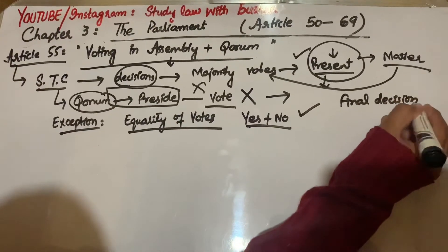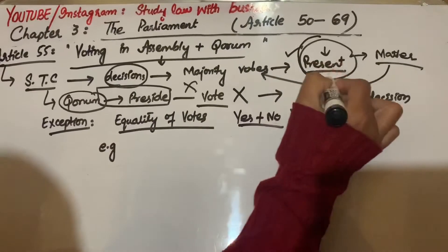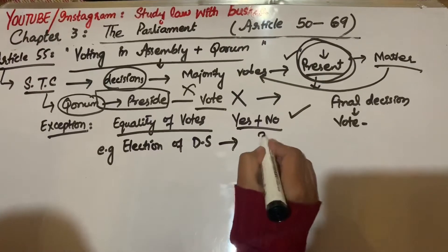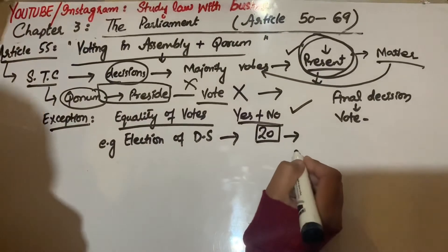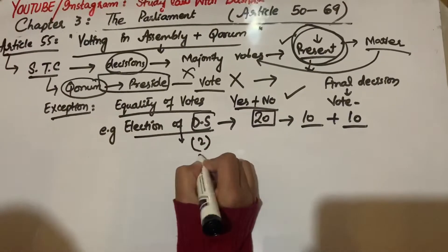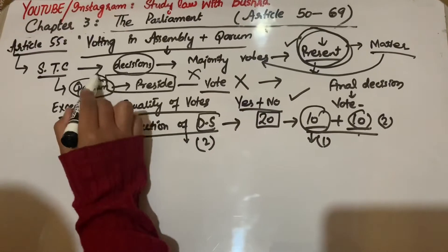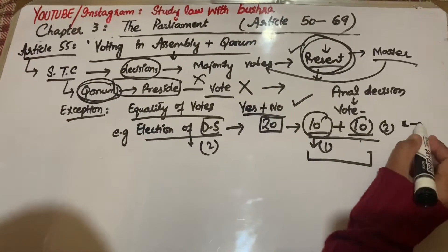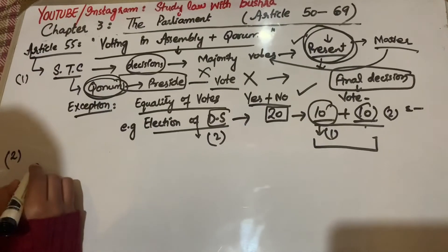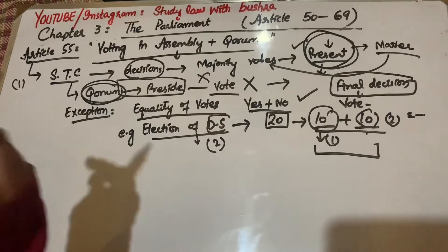For example, if there's an election of Deputy Speaker in the National Assembly and 20 people are present in quorum. If 10 people vote for one person and 10 people vote for another, this means we have equality of votes. When equality of votes occurs, the person presiding over the quorum, let's say the Speaker, will give his vote to eliminate this equality and reach a final decision.